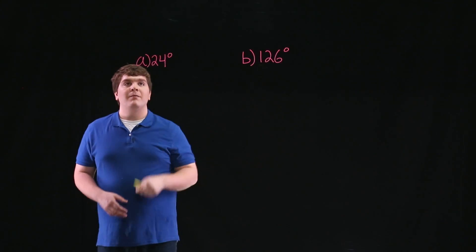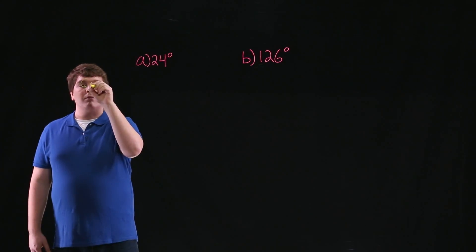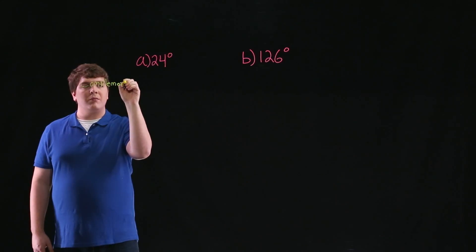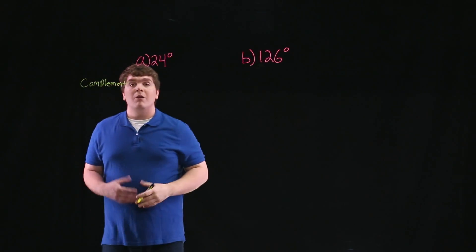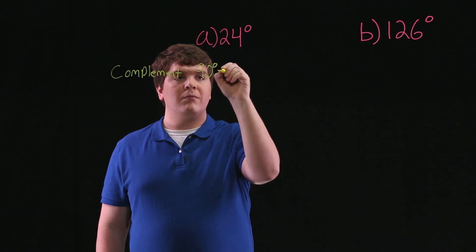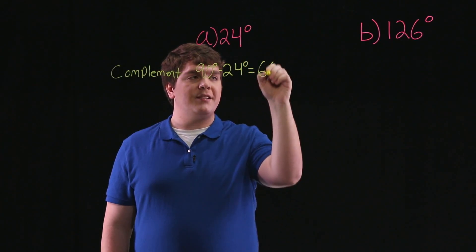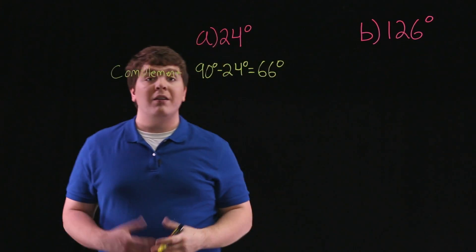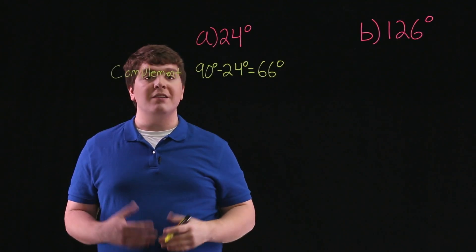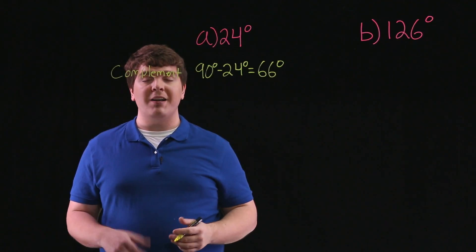So for part A, in order to find the complementary angle, we'll find 90 degrees minus 24 degrees, which is equal to 66 degrees. Now, it's easy to check that 24 degrees and 66 degrees are complementary, as their sum is 90 degrees.